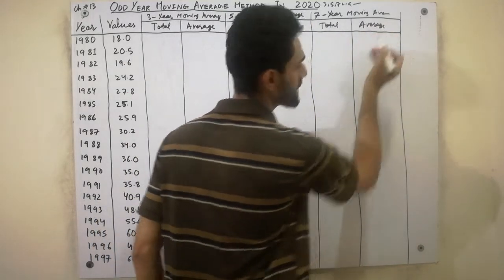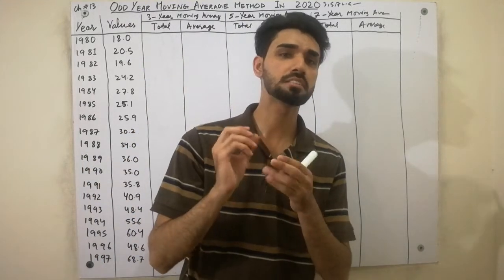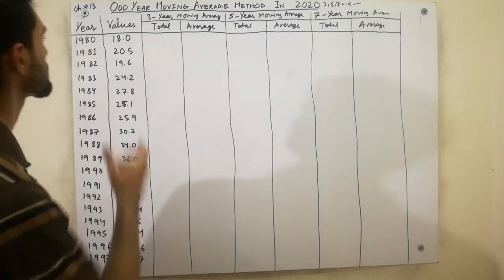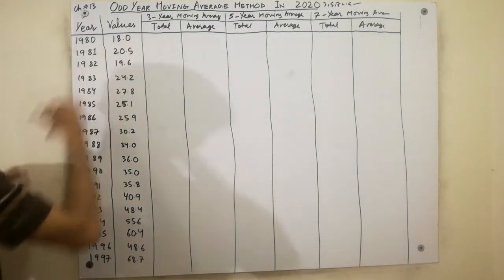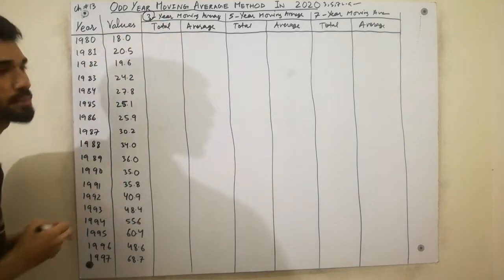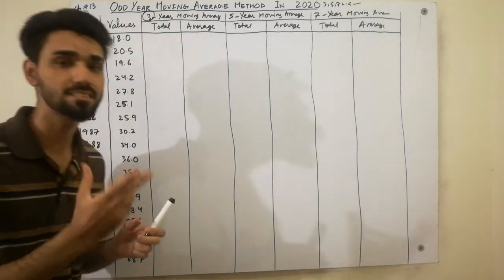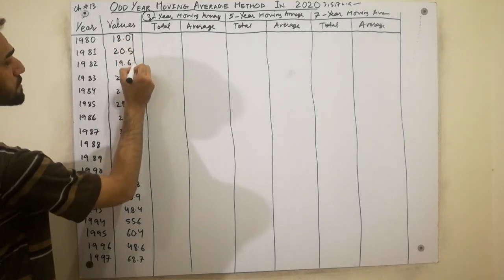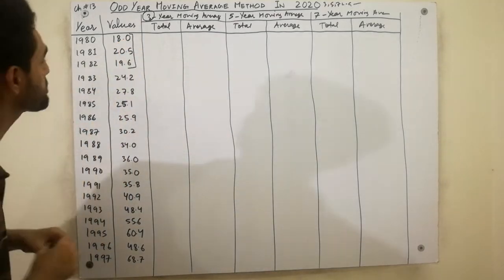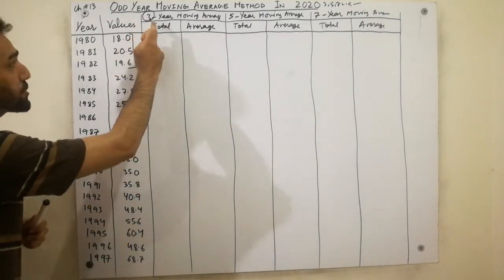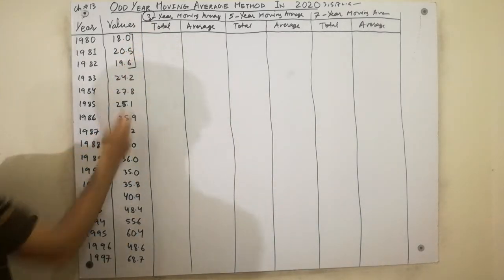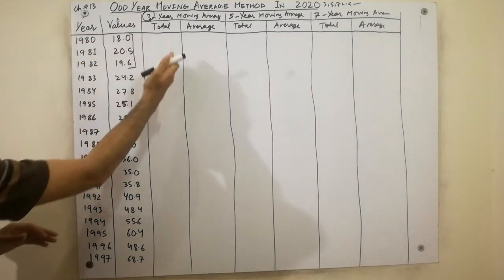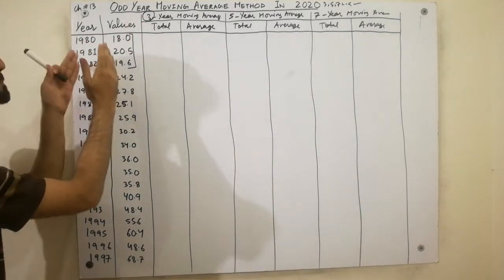3-period moving average — that is all. Very very easy. I will show you the most important tricks. Must be noted here that the number is 3. That number is 3. Since that number is 3, we will add up 3 values — values 1, 2, 3. The 3 shows we will add up 3 values.